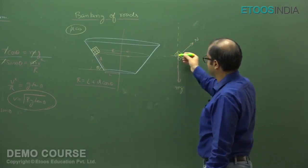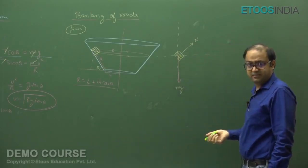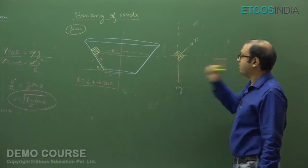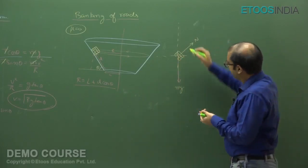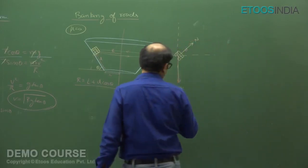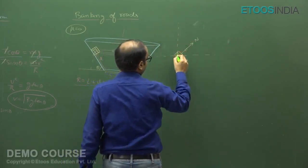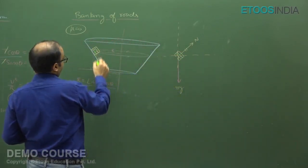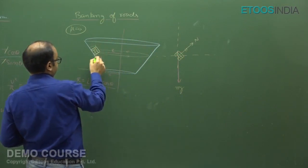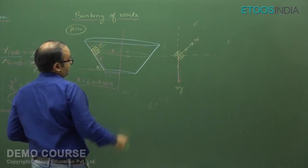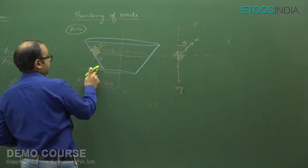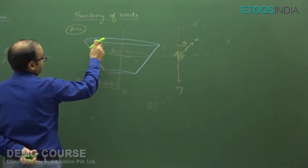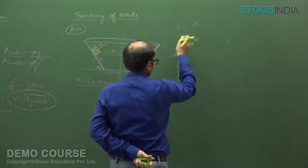Step 3: resolve forces in the three directions — perpendicular to the plane of circular motion, radial, and tangential. There is no force in the tangential direction, so we have uniform circular motion. The normal N makes an angle theta with the vertical. Using geometry: this angle is 90 − theta, so this is also 90 − theta, and this becomes theta.